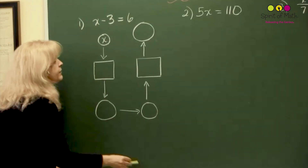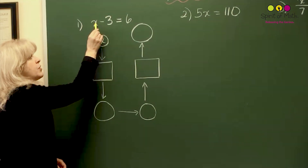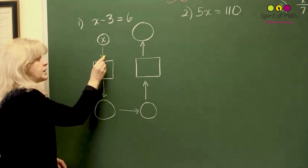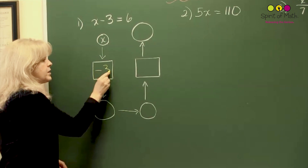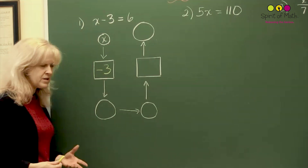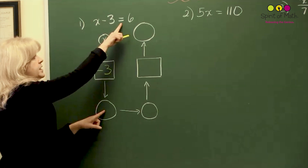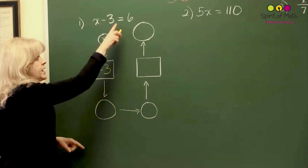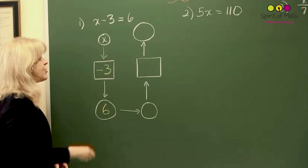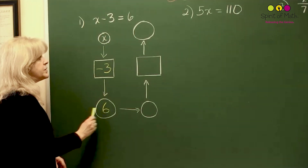If you put that variable x, you want to indicate what you do to that x. Notice the x starts here, and what you do is you minus 3 from the x — put a little arrow, then minus 3 in a little square, because all the numbers go in the squares. And there's also a circle at the end because it equals — that's why we have equals 6. So notice: x minus 3, x subtract 3, is equal to 6.